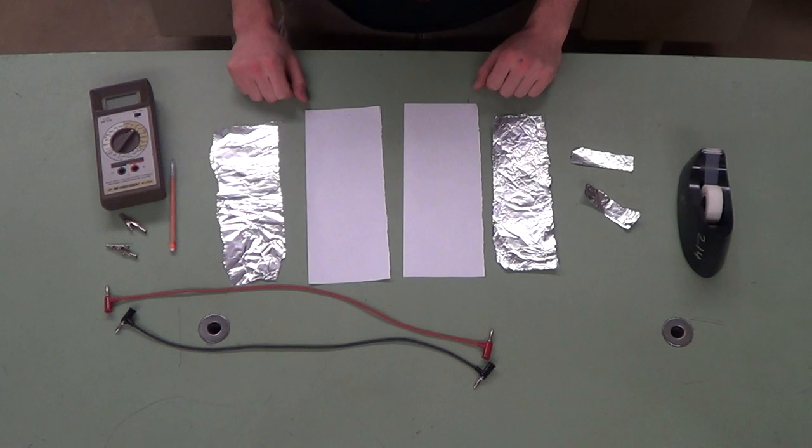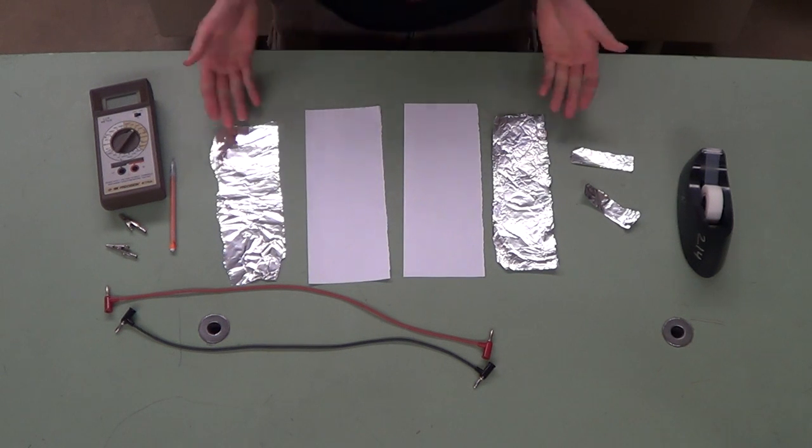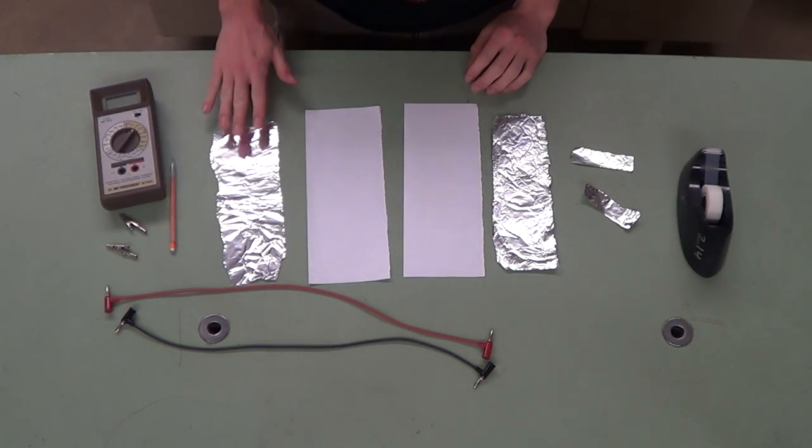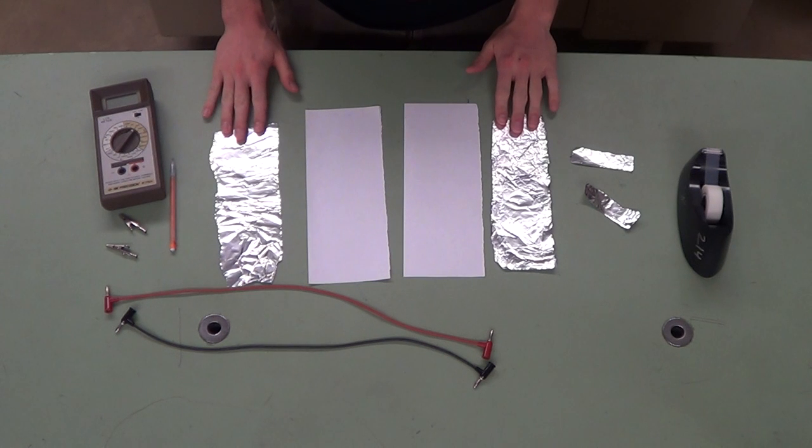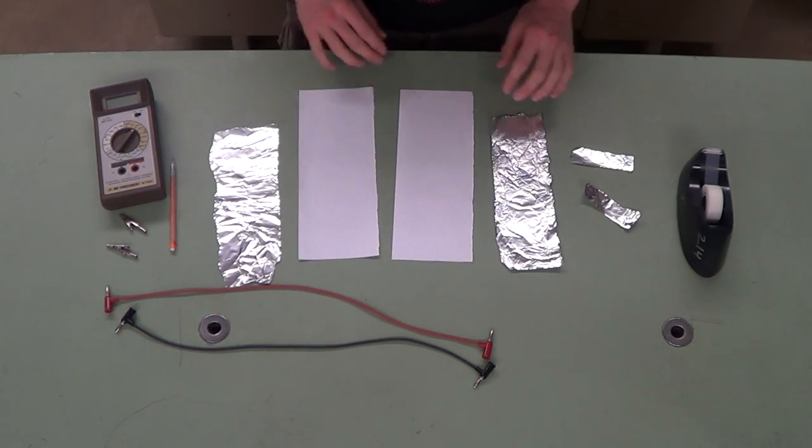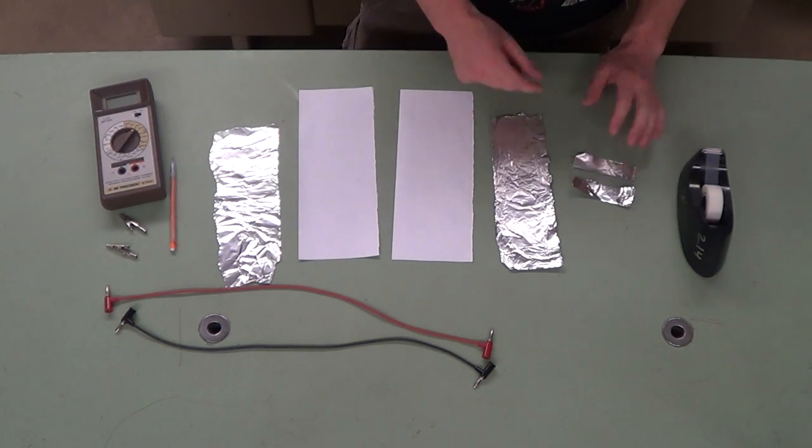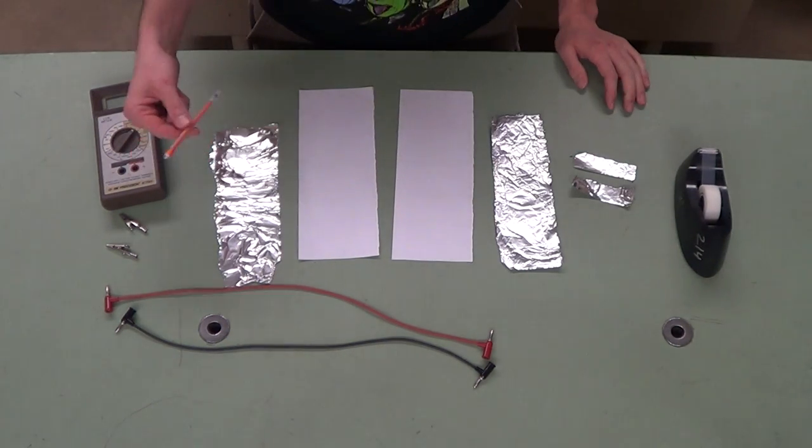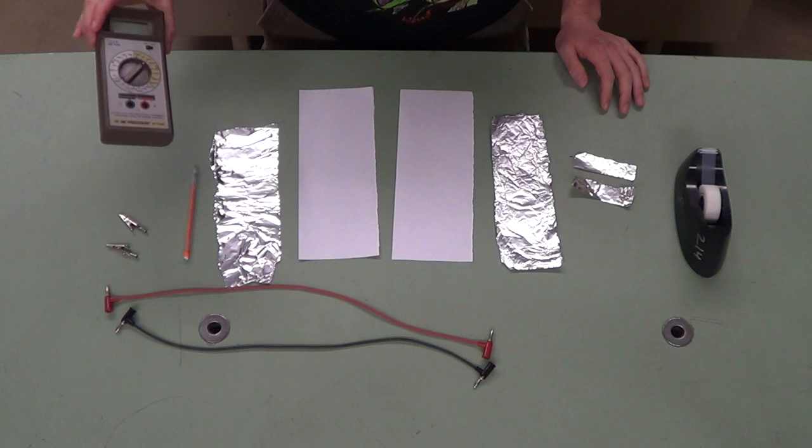In this lab we'll be making a capacitor from the equipment before you here. We have foil, two strips that are pretty wide, a little bit smaller than the paper strips, and then we have two small pieces of aluminum foil, some tape, a pen, and then the equipment to measure that.